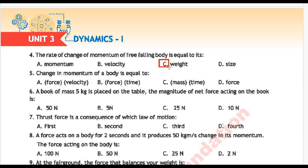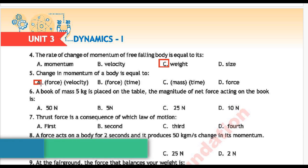Next question 5: Change in momentum of a body is equal to — Option A: force multiplied by velocity, Option B: force multiplied by time, Option C: mass multiplied by time, Option D: force. Correct answer is Option A: force multiplied by velocity.